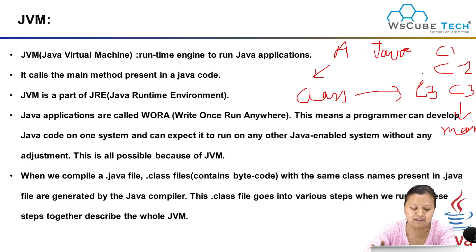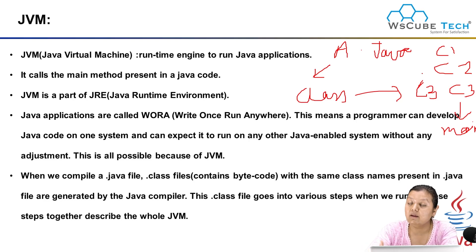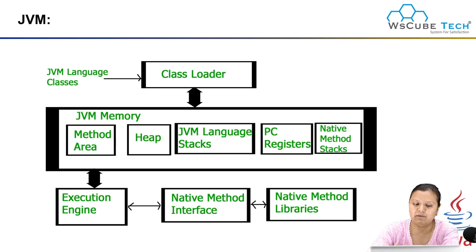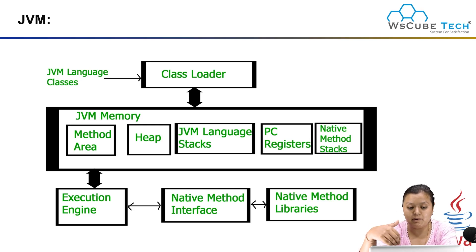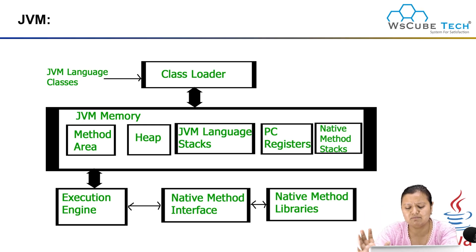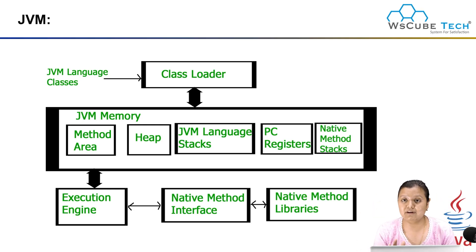So that is the unique feature. This class file will go through various steps when we run it, and this entire process is what describes JVM. If you look at this diagram of JVM, there is the class loader, JVM memory, method area, heap, stack, registers, native methods, execution engine, native method interface, and many other things. This is your whole Java architecture — the JVM architecture.